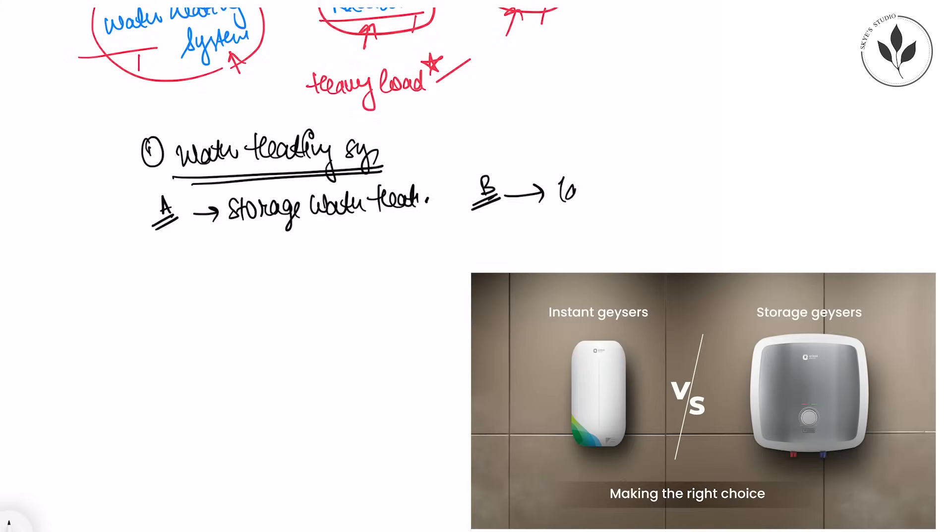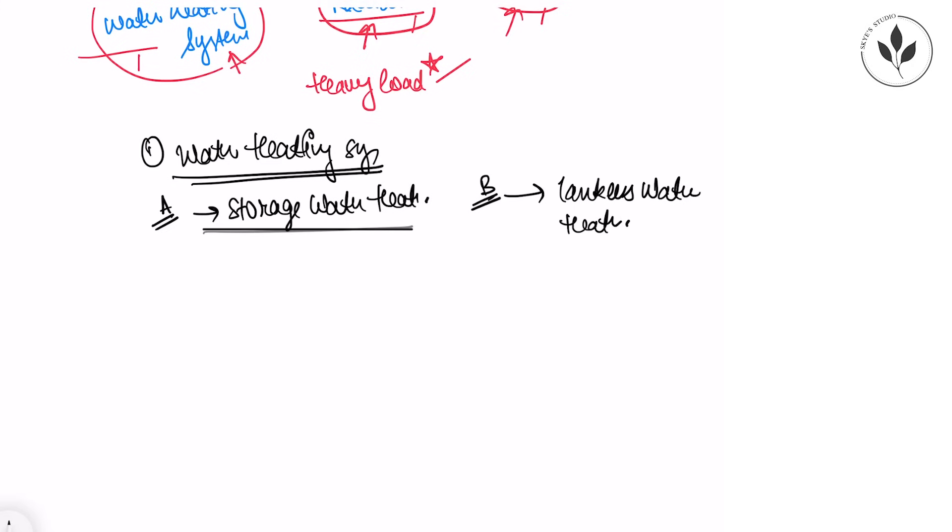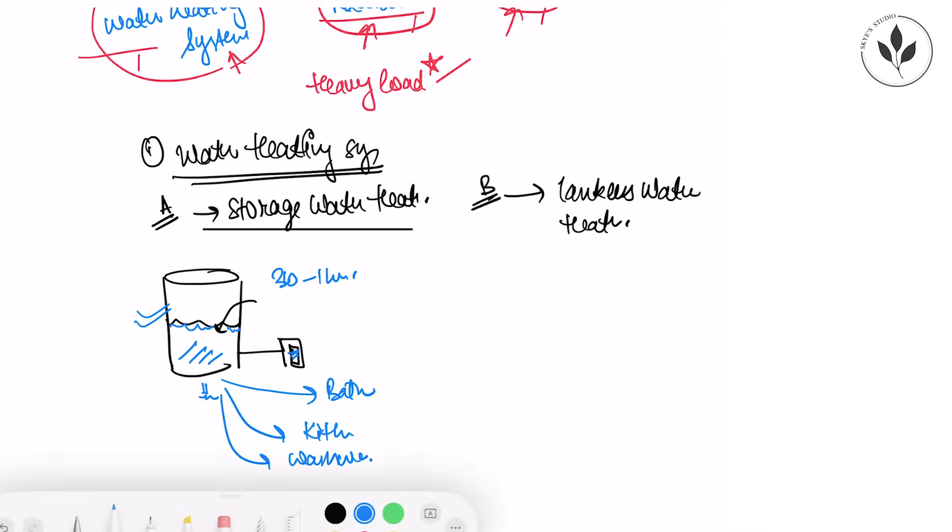In a storage water heater, this is a geyser where you store water inside and then switch it on. In around one and a half to one hour, your water will heat up completely and then you can use it from your taps wherever it's connected - maybe in your bath, kitchen, or near the wash basins. The water is stored in an insulated tank.